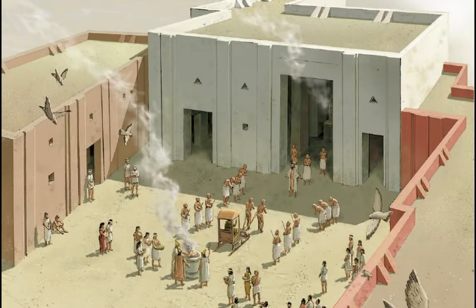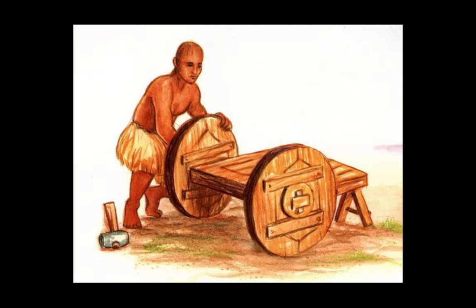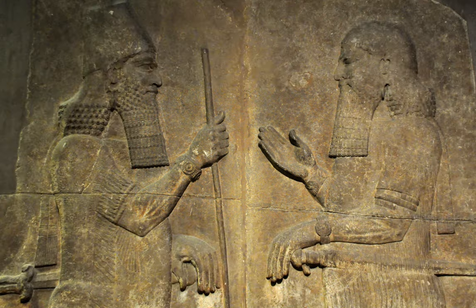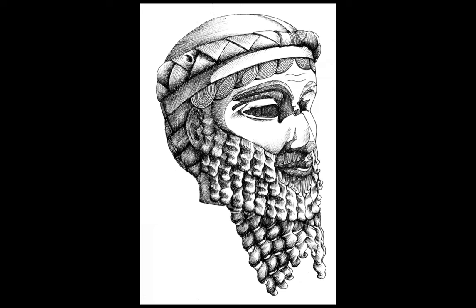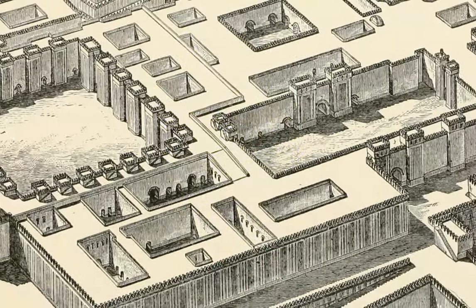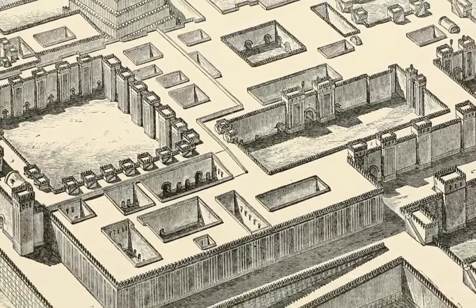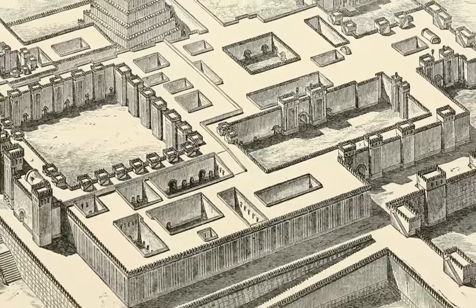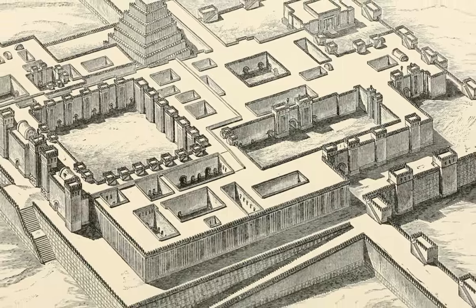Ideas and technologies didn't stay with one group of people for long — others acquired them and oftentimes became even more powerful than the original users. This was definitely the case with another Mesopotamian people known as the Akkadians. In 2340 BCE, Sumer was conquered by Sargon of Akkad. The Akkadians were once a semi-nomadic people who had gradually settled on the outskirts of Mesopotamia proper. Sargon ruled from his capital known as Agade, also called Akkad, believed to have been somewhere near the modern-day city of Baghdad — though we've never found the actual remains of Akkad, we have numerous inscriptions that confirm it existed.